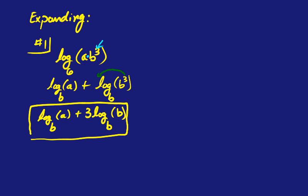Log base 6 of b to the third. Then we don't leave exponents where they are, but since exponents now can come in front, we'll finish the problem using the power property. So log base 6 of a plus 3 times log base 6 of b. And that would be fully expanded out.